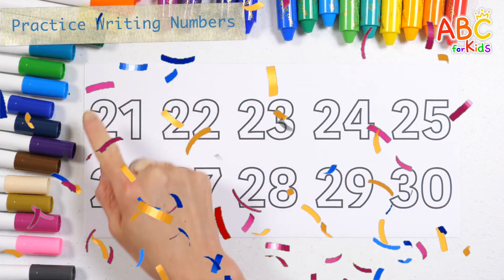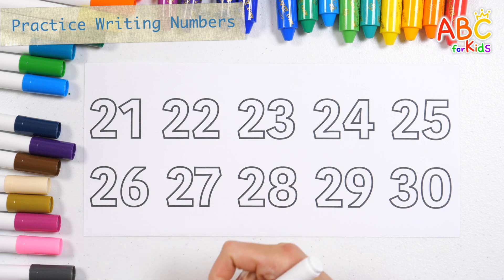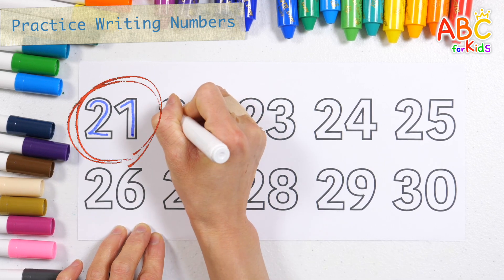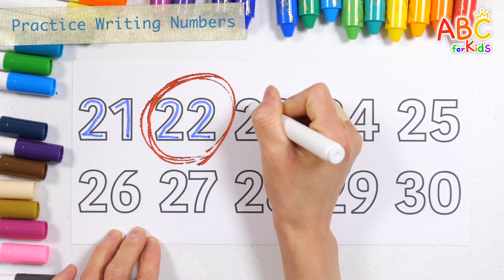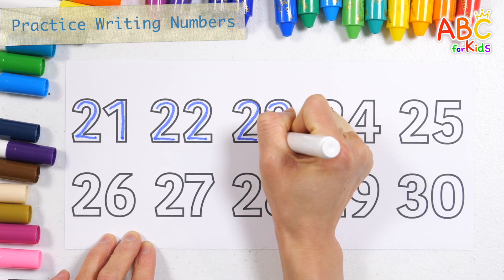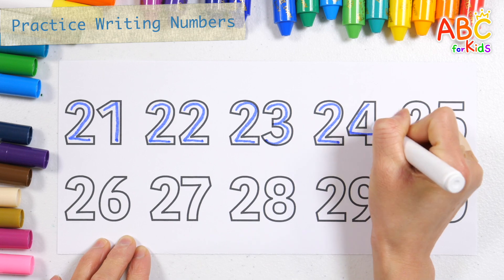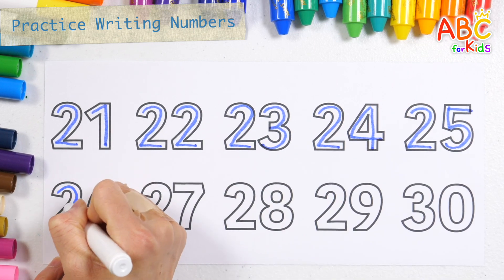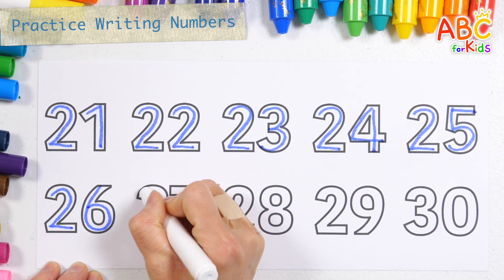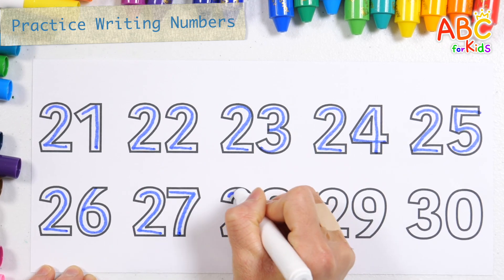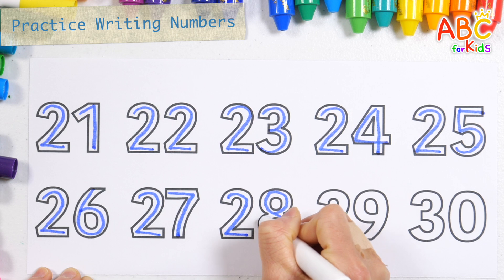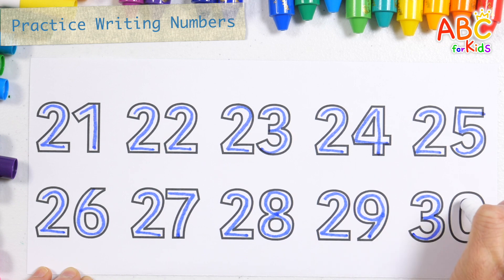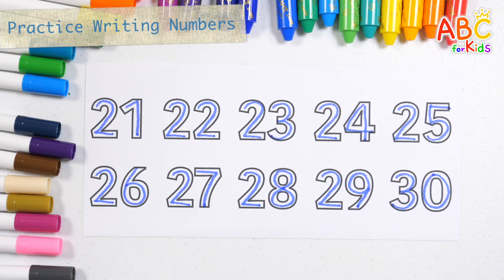Let's write the numbers 21 to 30 with a blue pen and read them. 21, 22, 23, 24, 25, 26, 27, 28, 29, 30. Great job!